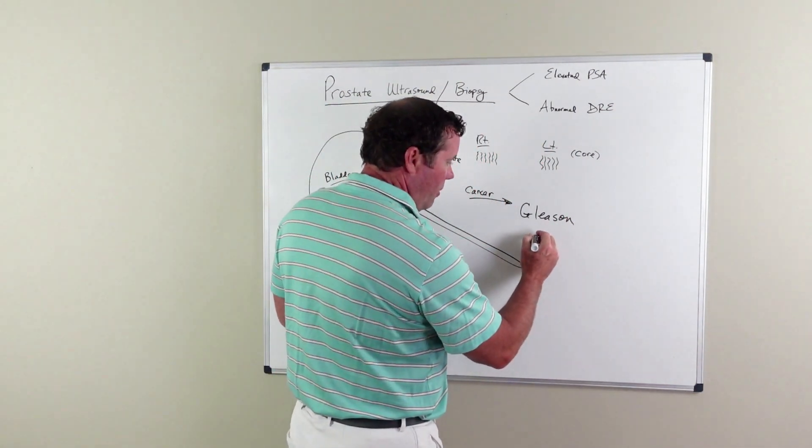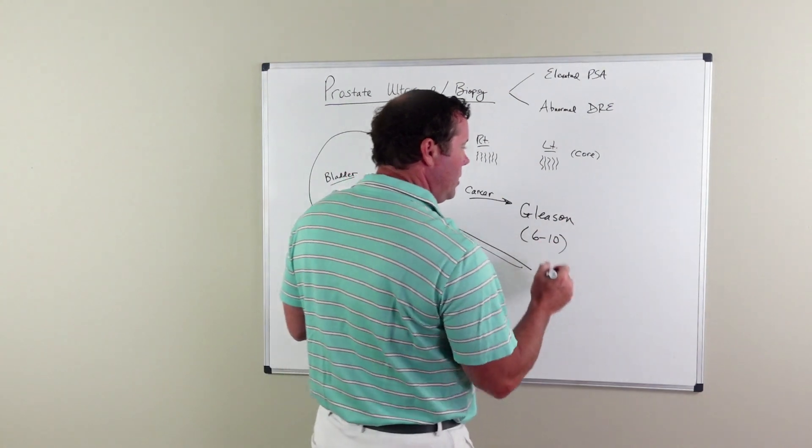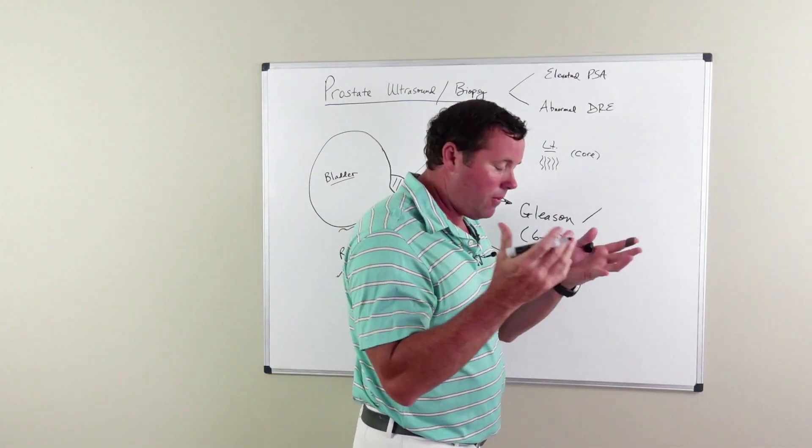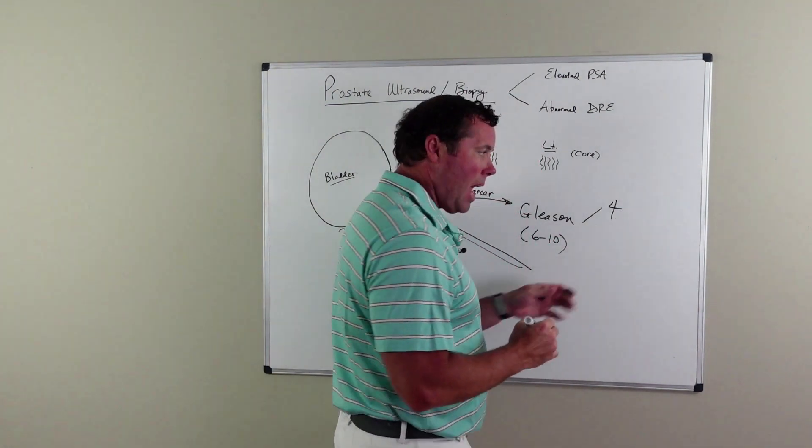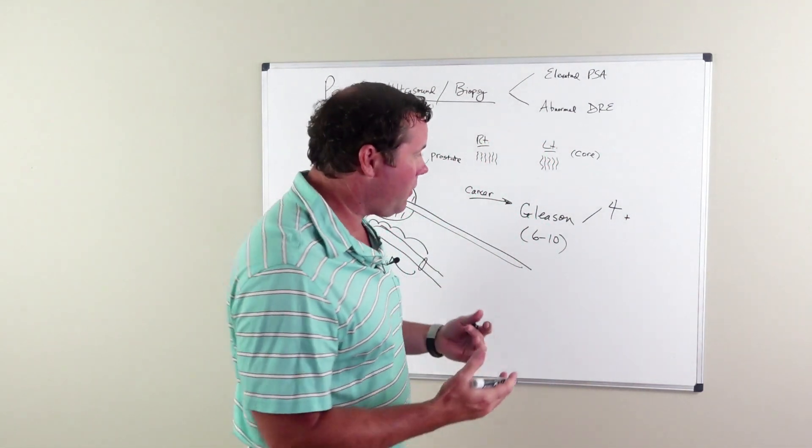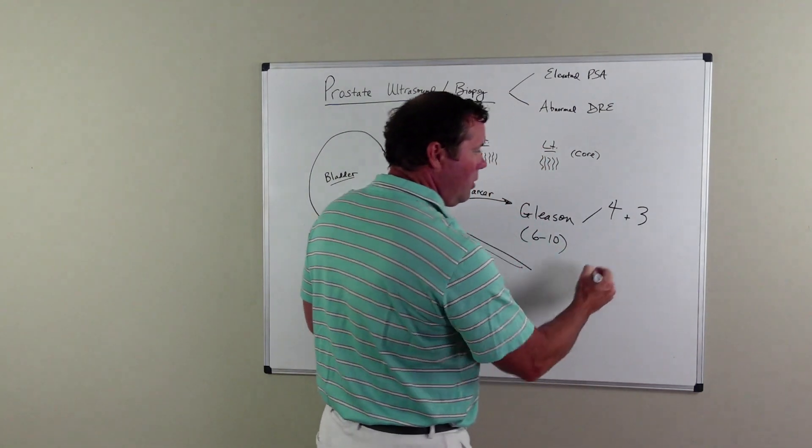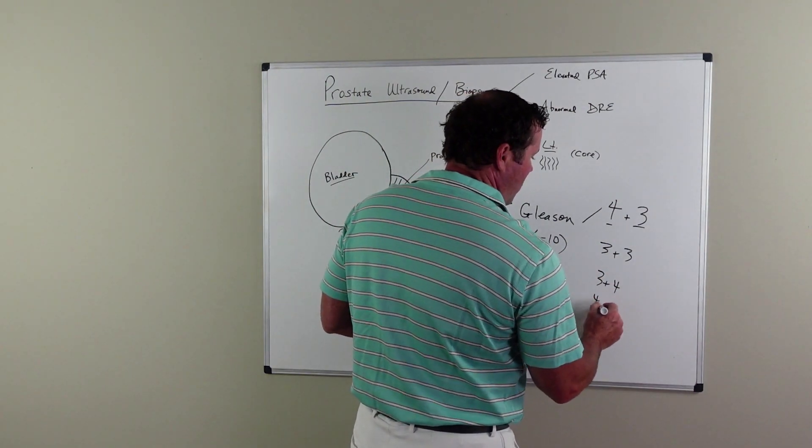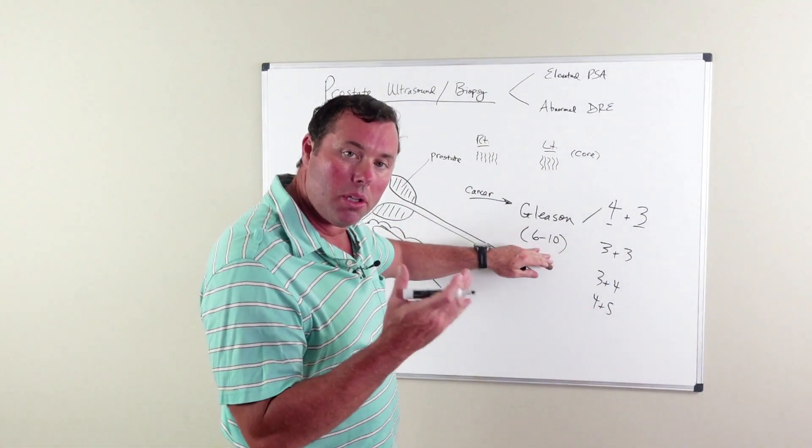This is a number that ranges between 6 and 10, and there's two different numbers for the Gleason score. The first number is the Gleason score that has the highest amount of cancer present. So if there is more Gleason grade 4, that's the first number. The second number is the secondary type of cancer or the less common type of cancer that's present. It could be a 4 plus 3, 3 plus 3, 3 plus 4, or 4 plus 5. There's two different numbers that are added up to come up with a total Gleason score.